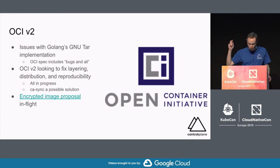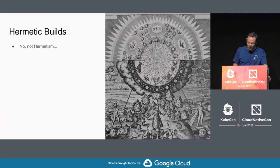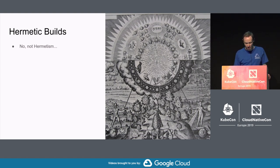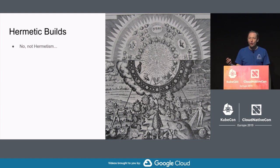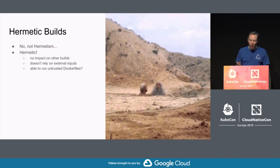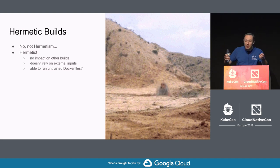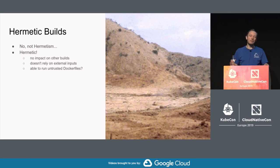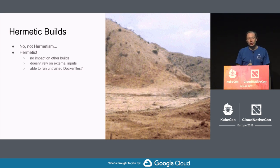Watch that space, especially for Brandon Lum's encrypted image layers proposal. And on to the final property: hermeticism — related to the practice of hermitage, seclusion, isolation and independence. In container terms, our builds should not impact each other, they should not leak state or be knowable by another build, and we shouldn't rely on anything outside of the build context. Hermeticism also makes building images in multi-tenanted environments practical, allowing us to share build farms across projects with similar trust boundaries.